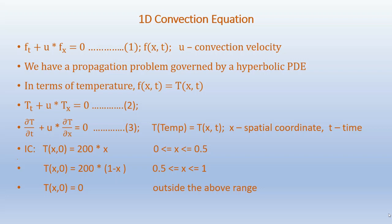If f represents temperature, we have f(x, t) equals T. Accordingly, equation 1 can be represented as T_t plus u times T_x equals 0, or in partial derivative form as ∂T/∂t plus u times ∂T/∂x equals 0, where T is the temperature as a function of x and time t. The initial conditions are: T(x, 0) equals 200 times x for x from 0 to 0.5; T(x, 0) equals 200 times (1 minus x) for x from 0.5 to 1; and T(x, 0) equals 0 outside that range.